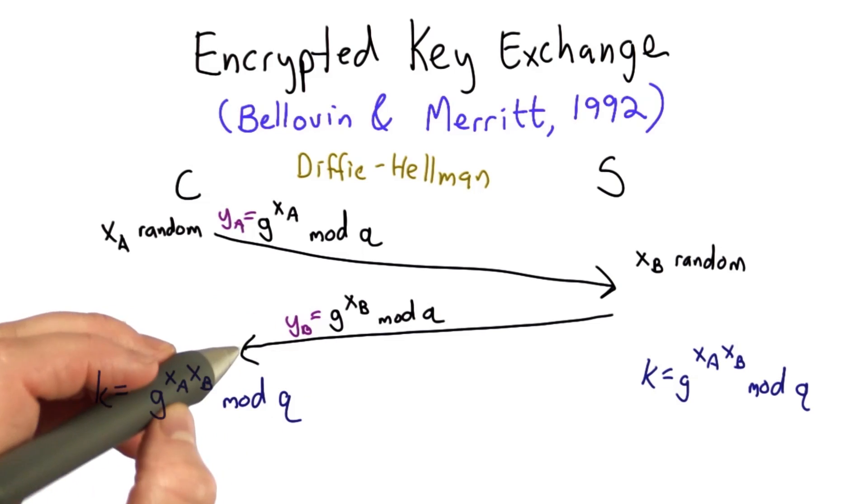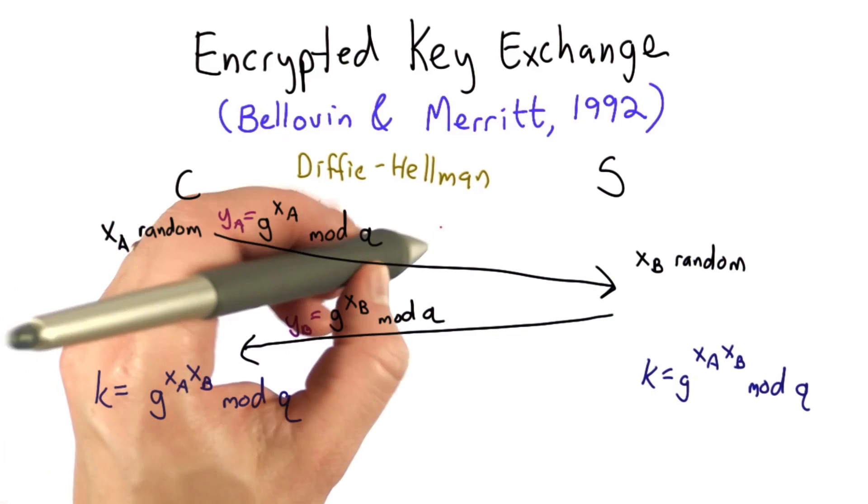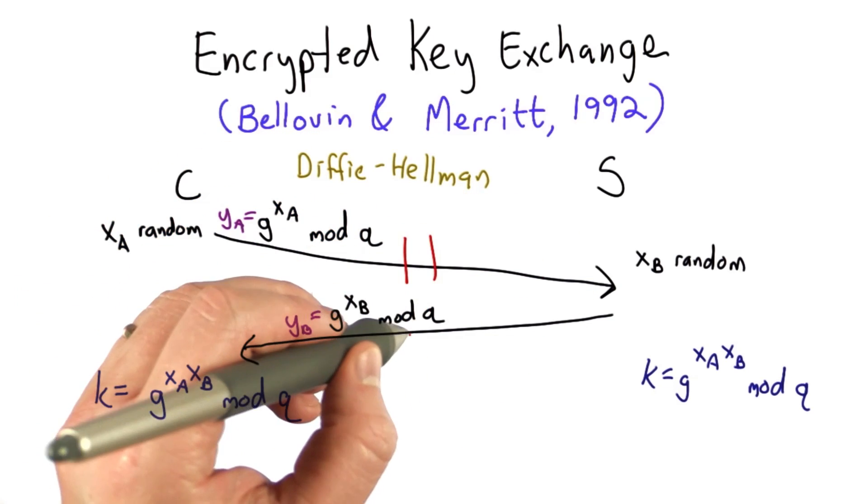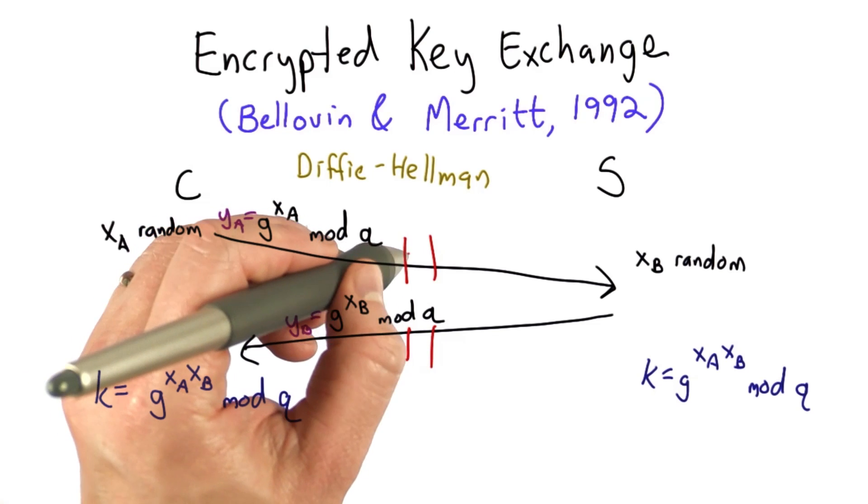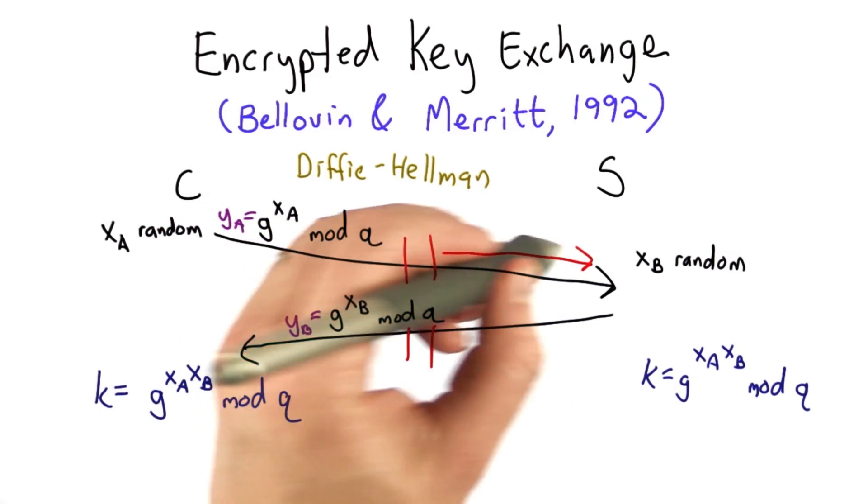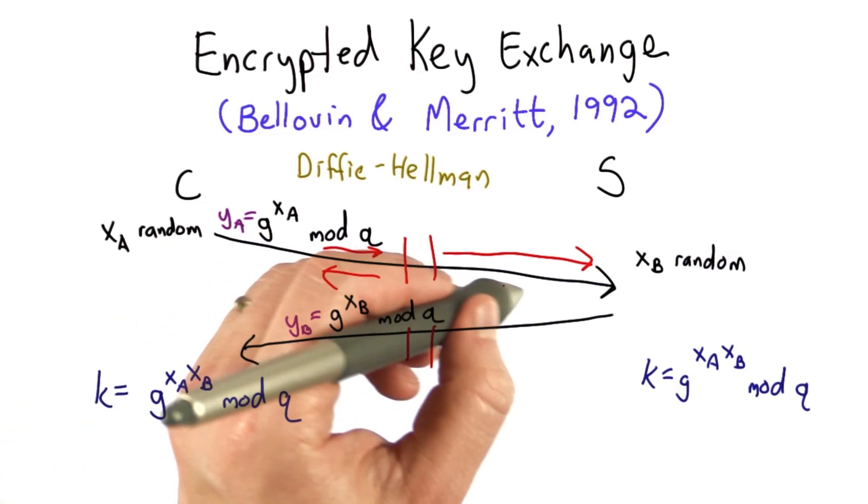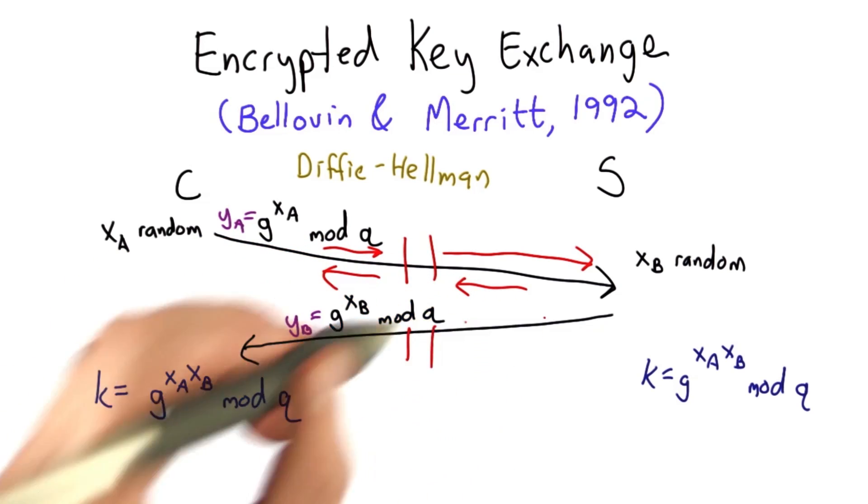The problem with Diffie-Hellman for authentication is if there's an active attacker, that attacker can change the values, send something different, and set up a shared key independently with each party.